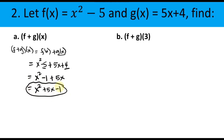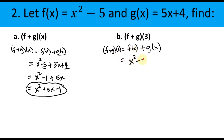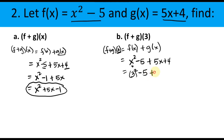How about letter b, (f + g)(3)? Using the formula: (f + g)(3) = f(x) + g(x), substituting x = 3. So f(x) = x² − 5 becomes 3² − 5, and g(x) = 5x + 4 becomes 5(3) + 4. Then simplify: 3 squared means 3 × 3.